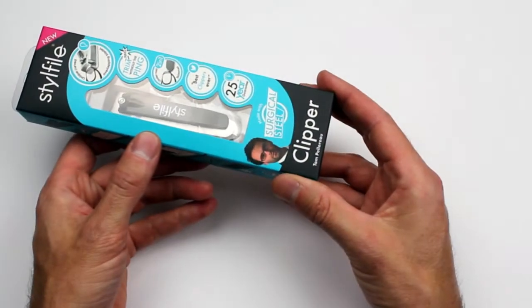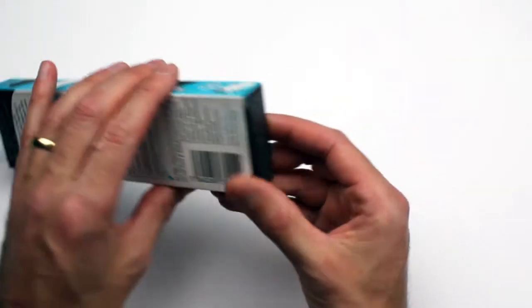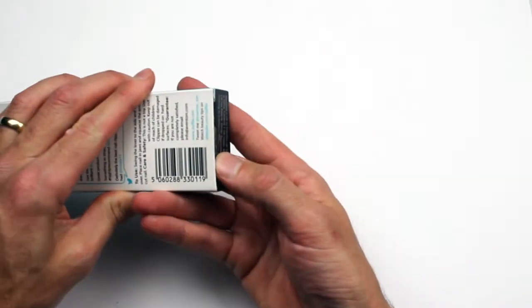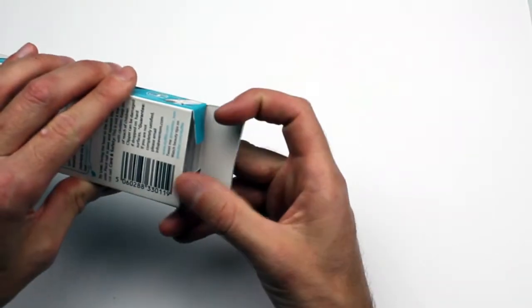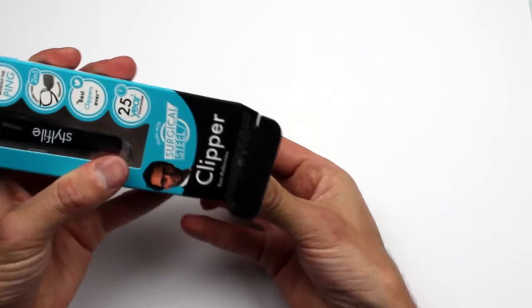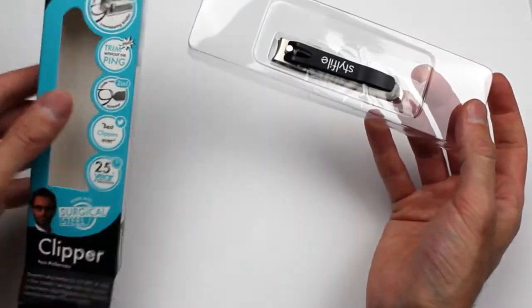Now as a lot of people seem to like keeping the packaging, I'll show you a little tip on how to open without damaging the box. If you go to the bottom and you just press quite hard there, you'll see that the label just pops off and then you can pull it open.